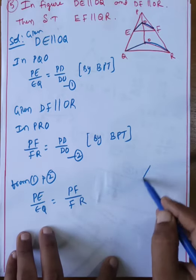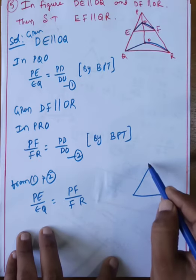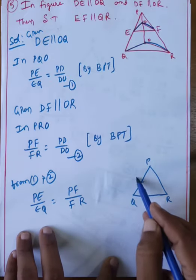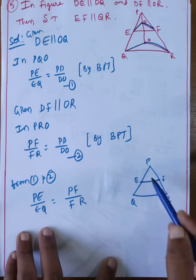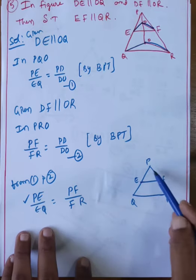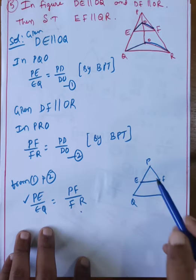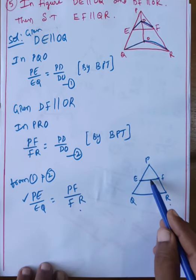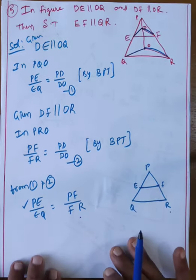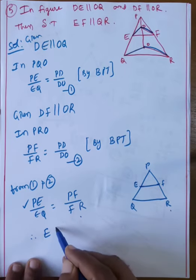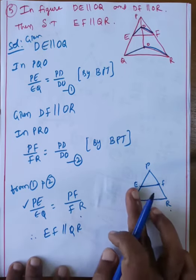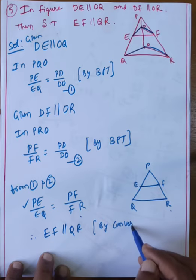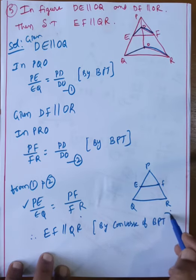In triangle PQR, EF is a line where PE by EQ equals PF by FR. Since the line divides the two sides in the same ratio, by the converse of BPT, EF is parallel to QR.